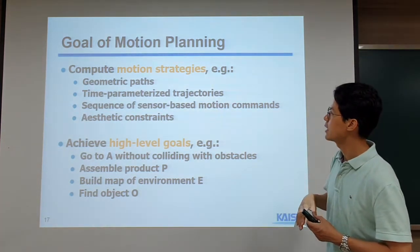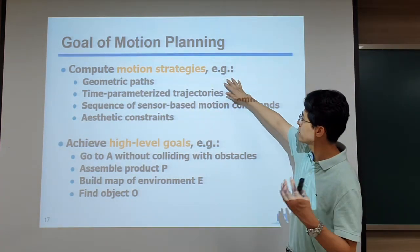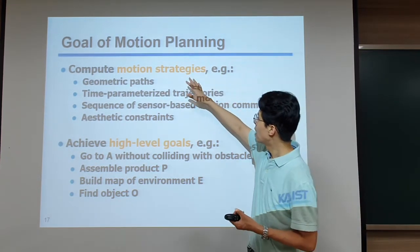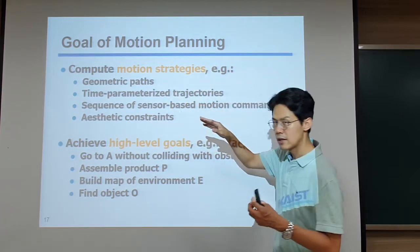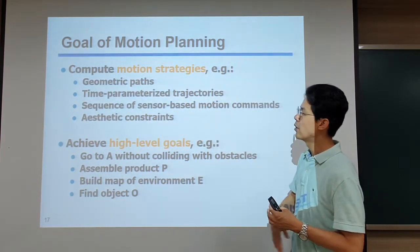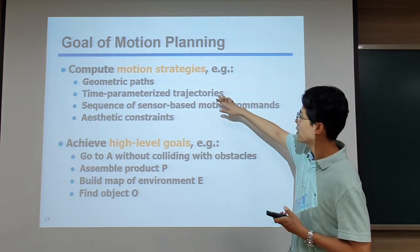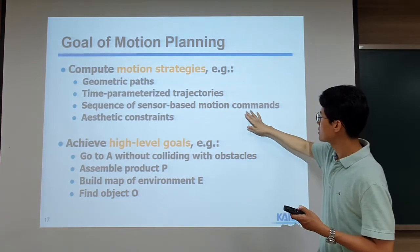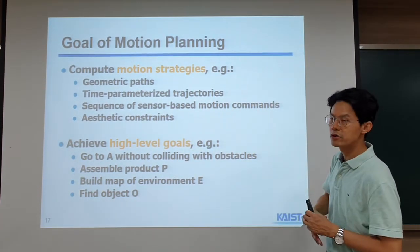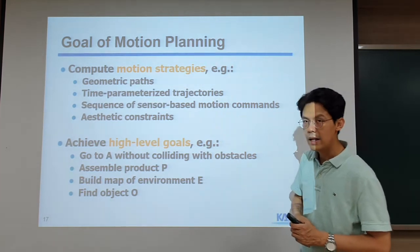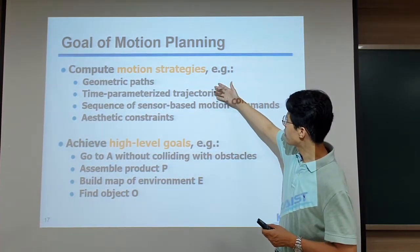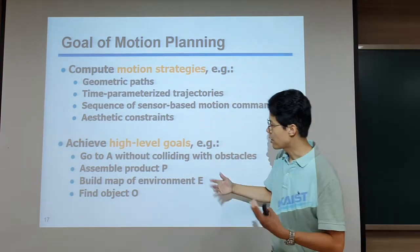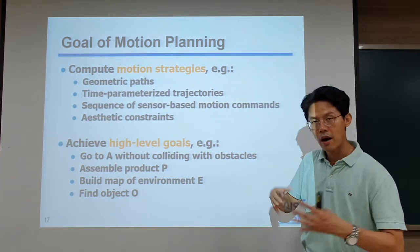The main goal of motion planning is to compute some motion strategy. In a simple setting, we want to compute a path — a geometric path that connects from one point to another. We can also compute a time-parameterized trajectory, or a sequence of sensor-based motion commands. At a higher level, we want to achieve goals such as going to point A without colliding with obstacles, assembling a product, or navigating a mobile environment.